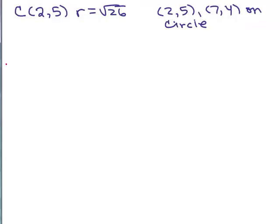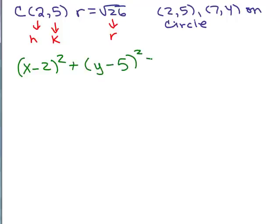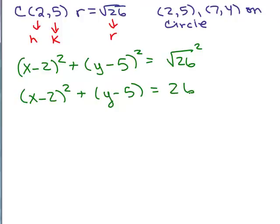It also asks us to write the equation in standard form. So let's go ahead and do that. Since this is your h and that's your k, and that's your r right here, I'm going to plug that in to the equation. So it's (x - 2)² + (y - 5)² equals (√26)² and we usually just write that as (x - 2)² + (y - 5)² = 26. So there is the standard form of this circle.